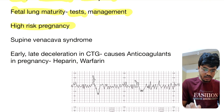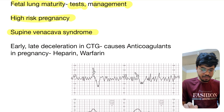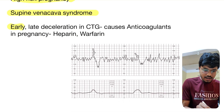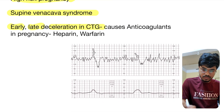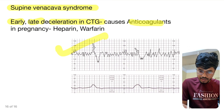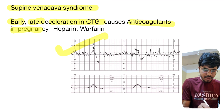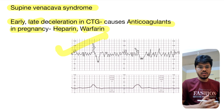High risk pregnancy. Supine hypotensive syndrome. Early and late deceleration in CTG — in this CTG this is late deceleration. Anticoagulants in pregnancy — heparin and warfarin.